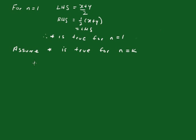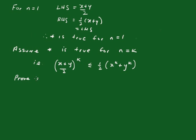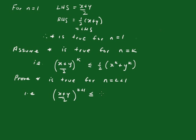That is, (x plus y)/2 to the k is less than or equal to one half of x to the k plus y to the k. And we need to prove the statement is true for n equals k plus 1. That is, (x plus y)/2 to the k plus 1 is less than or equal to one half of x to the k plus 1 plus y to the k plus 1.